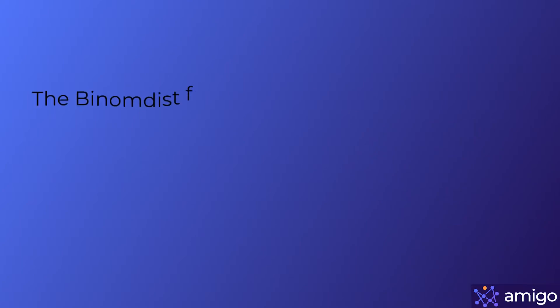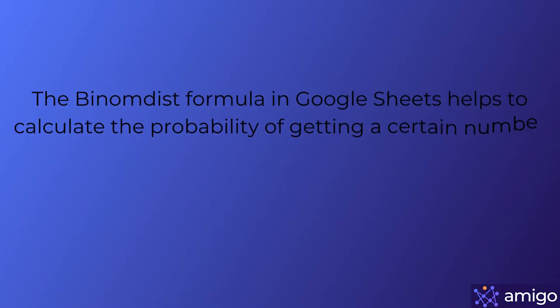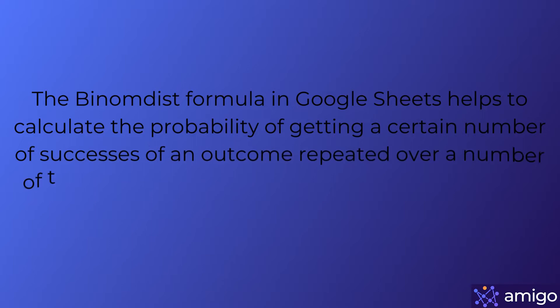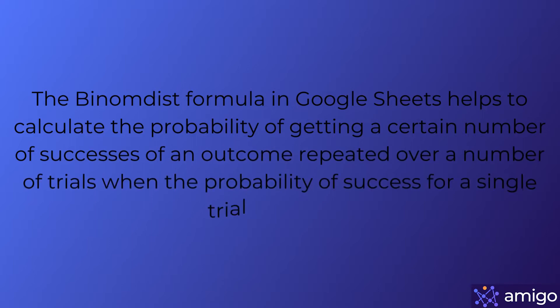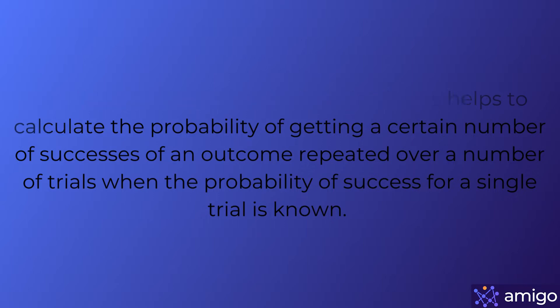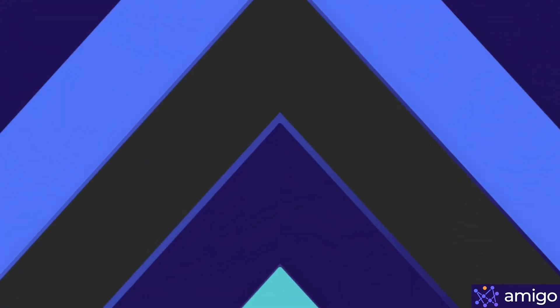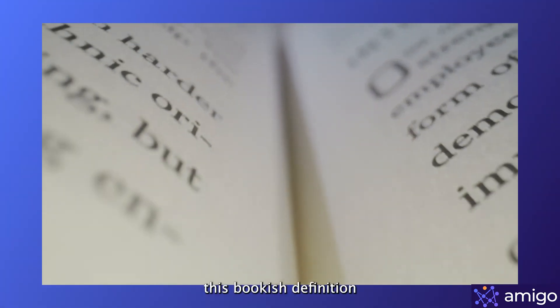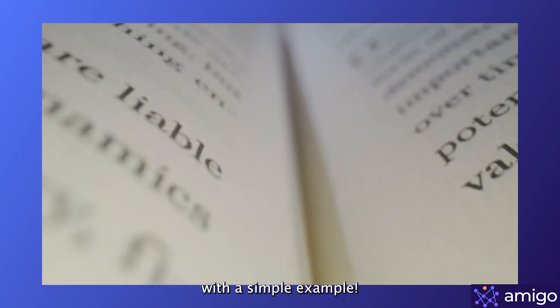The BINOMDIST formula in Google Sheets helps to calculate the probability of getting a certain number of successes of an outcome repeated over a number of trials, where the probability of success for a single trial is known. Let me demystify this definition with a simple example.